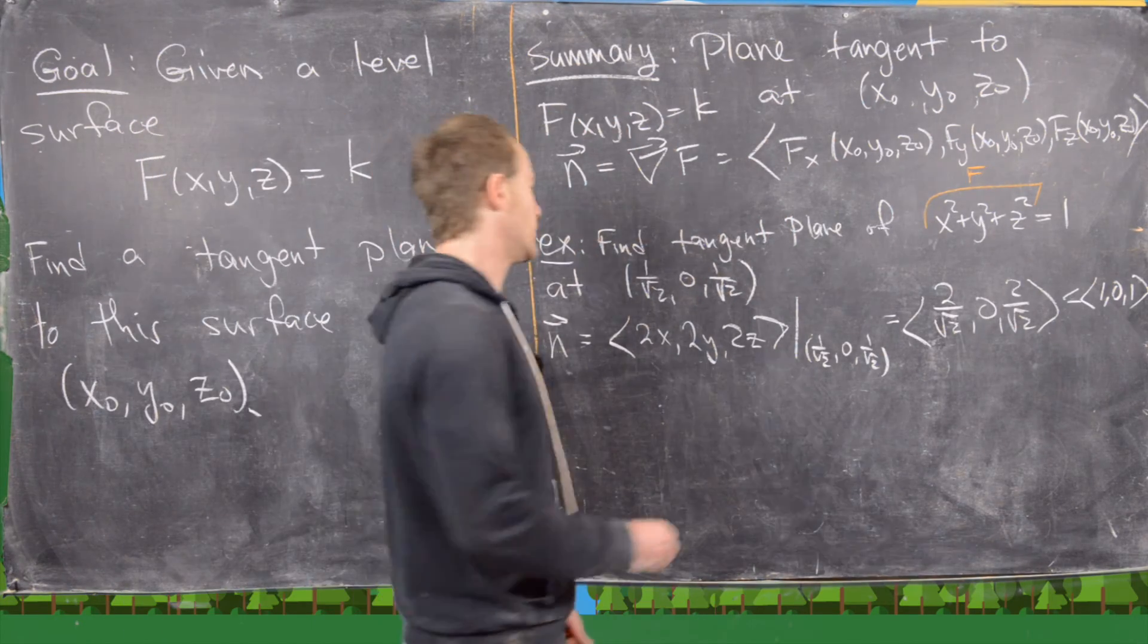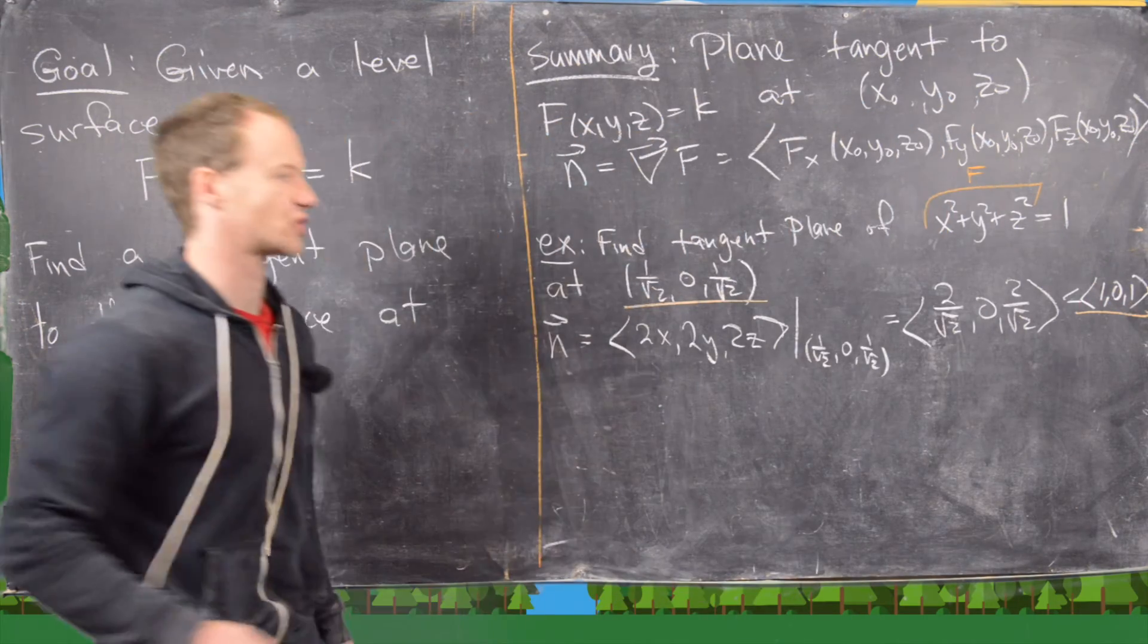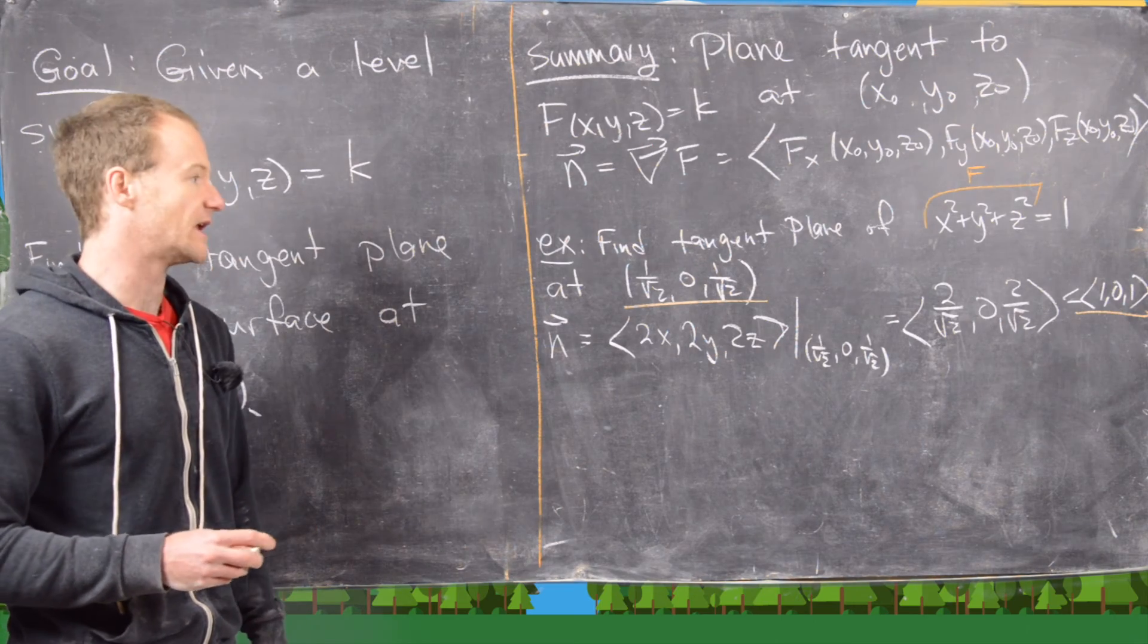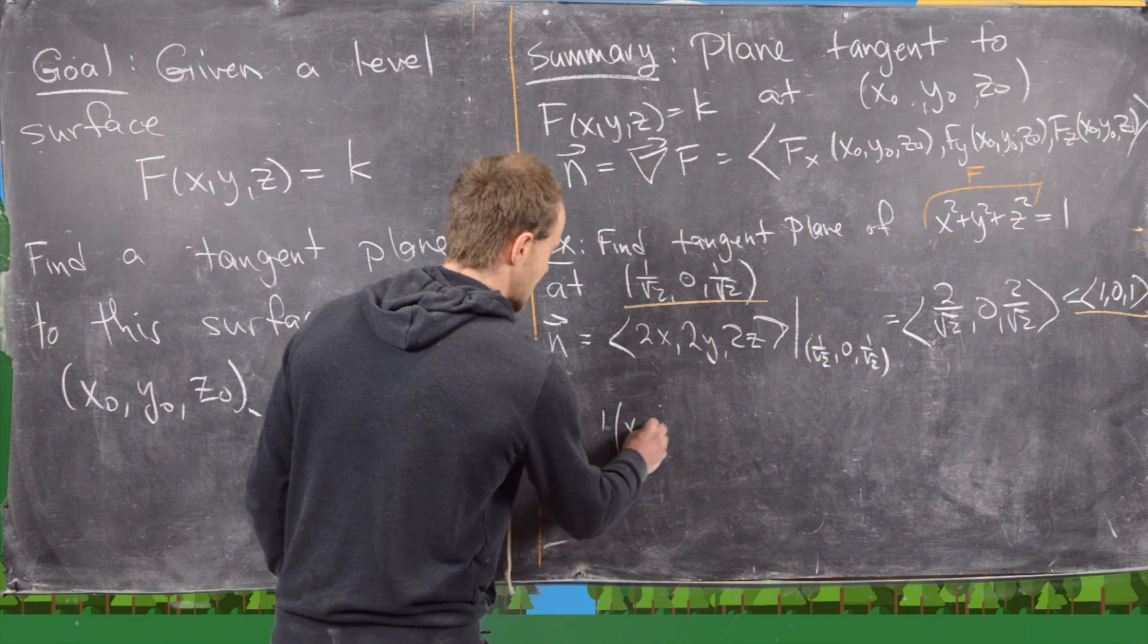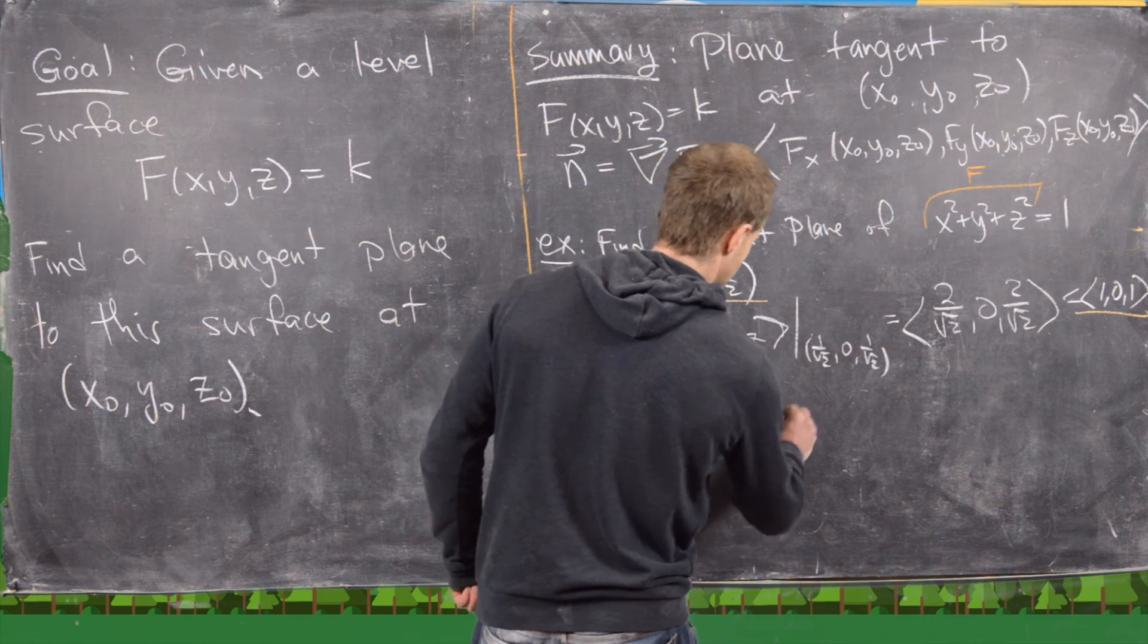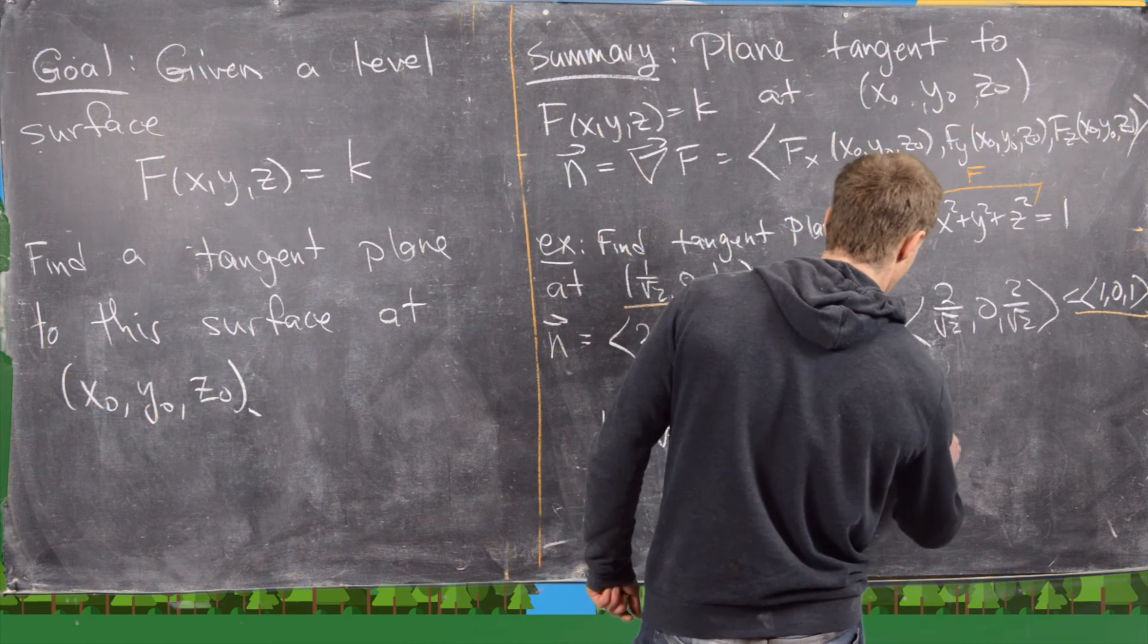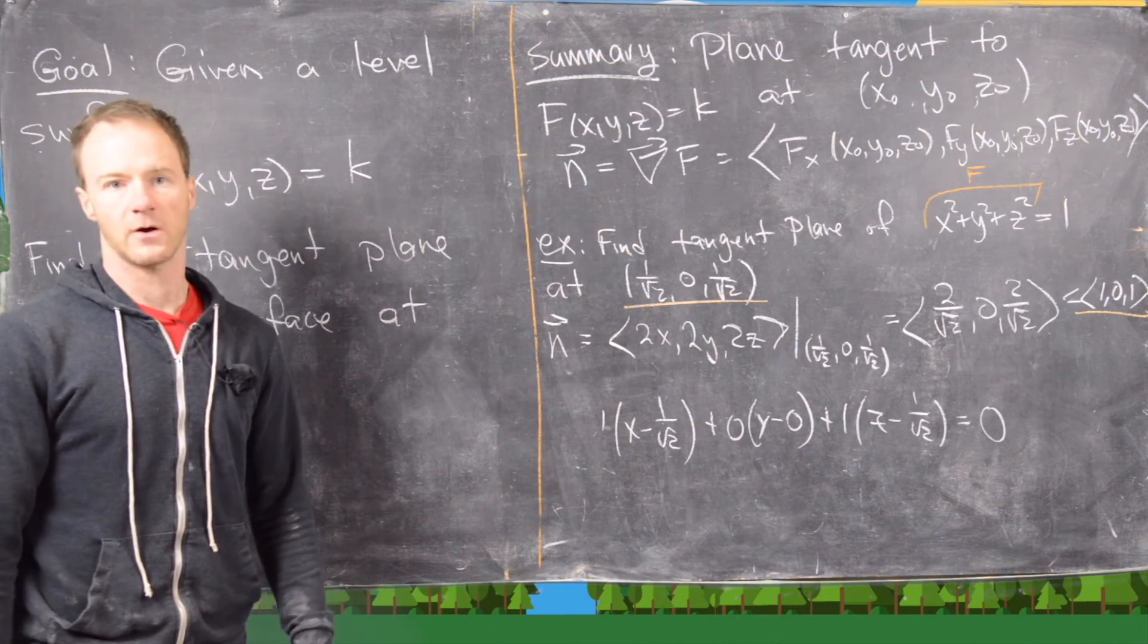But now what we have is we have a point on the plane, and we have a vector normal to that plane, and we can use the equation of the plane built off of that point. So that's going to give us 1 times x minus 1 over root 2, plus 0 times y minus 0, plus 1 times z minus 1 over root 2 equals 0.